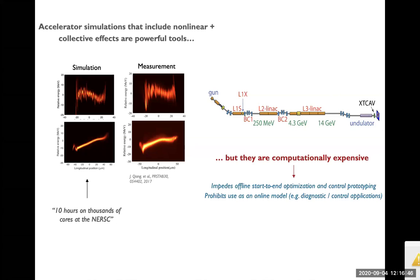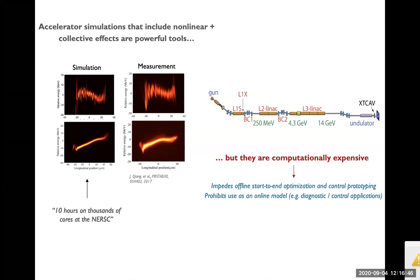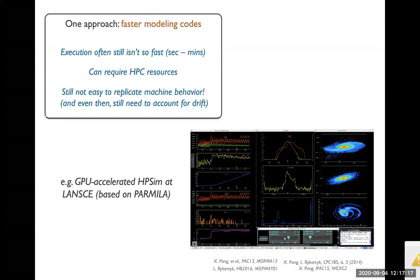This means we can't use that kind of simulation online with the machine, and it's prohibitive for offline experiment design. Some approaches use GPU-accelerated particle accelerator simulations for faster execution, but speeds are still seconds to minutes, not every facility has the necessary HPC resources on site, and it remains extremely difficult and labor-intensive to get a simulation to actually match machine behavior — and once you've done that, things still drift, requiring a constant update process.